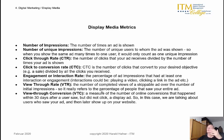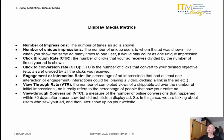The view-through rate, VTR, is the number of completed views of a skippable ad over the number of initial impressions — the percentage of people who watched the entire ad. If you watch YouTube, you will recognize that advertising is called upon and you can click it away or watch it through. The view-through conversion, VTC, measures the number of online conversions that happened within 30 days after a user saw but did not click a display ad. Using the same IP address and log files, platforms can clearly identify whether you are the same user.